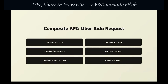For example, the Uber ride system: when you tap 'request ride,' a single API call triggers everything — it gets your current location from Google Maps API, finds nearby drivers using the Uber driver API, calculates the fare using the pricing API, authorizes your payment method using the payment API, sends a notification to the driver using the notification API, and creates a ride record. All of that from one button press — that's composite API orchestrating multiple services.